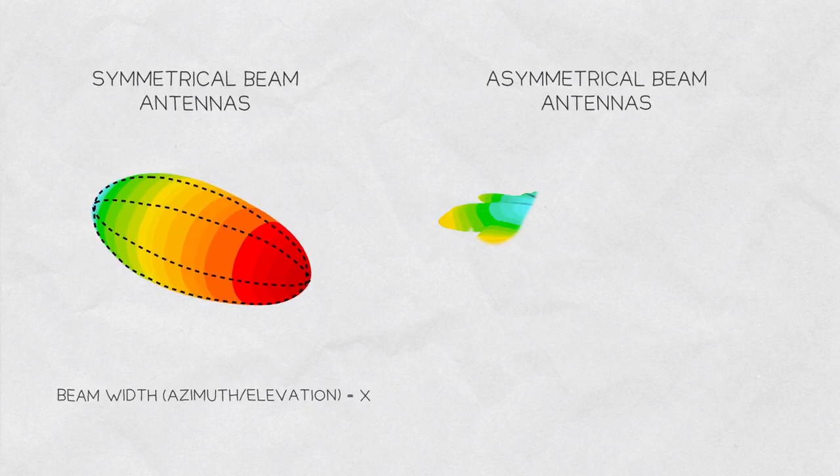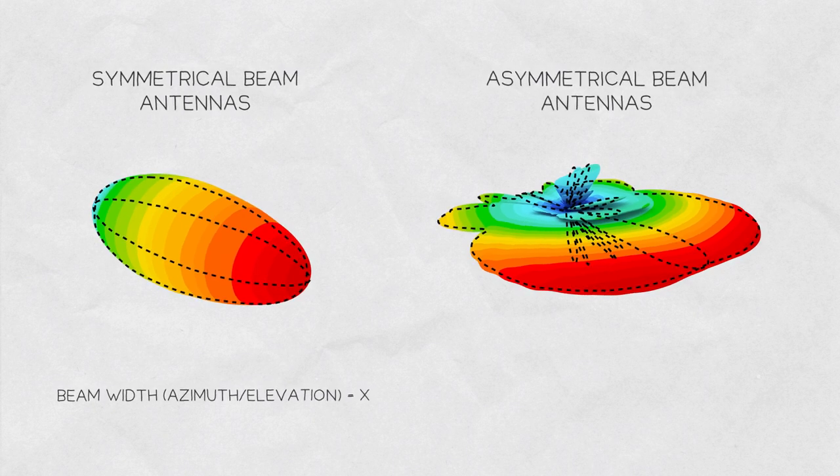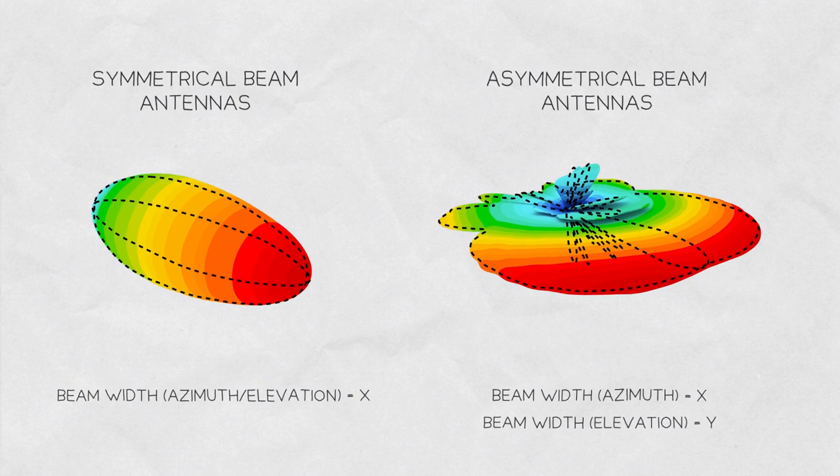Antennas with asymmetrical main beams have radiation patterns with different beam widths in both planes. Therefore, these antennas have two beam width values, one for azimuth and one for elevation.